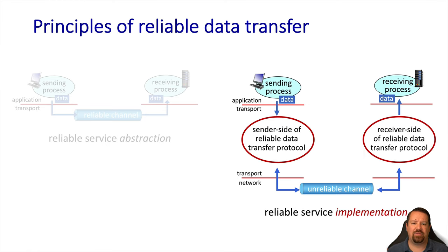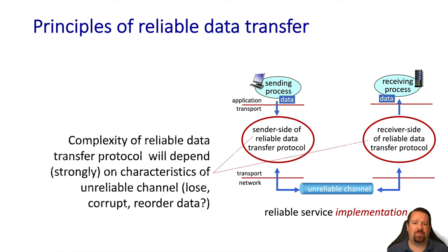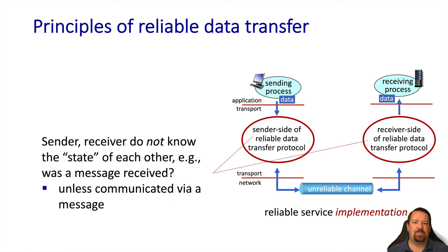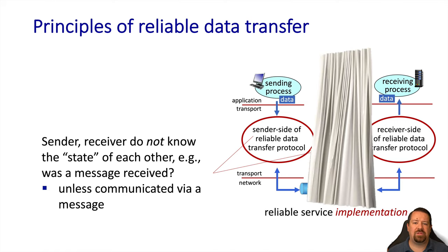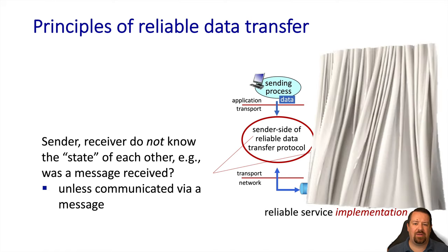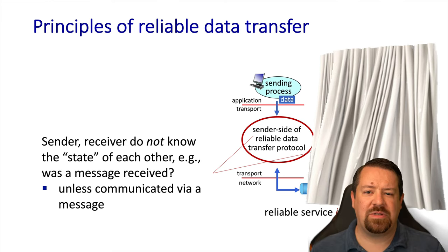This involves the sender and the receiver exchanging control messages to implement the reliability. When we say that the underlying channel is unreliable, this can take a few different forms. For example, losing data has different implications than corrupting data, and there's also the issue of reordering data. The sender and the receiver will need to communicate some information about their state, so we could say that they are blind to one another's state except for what is exposed via explicit control messaging.